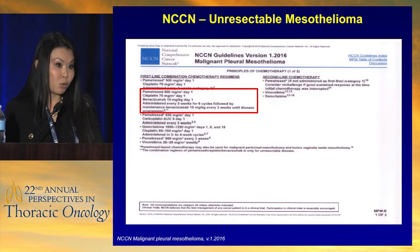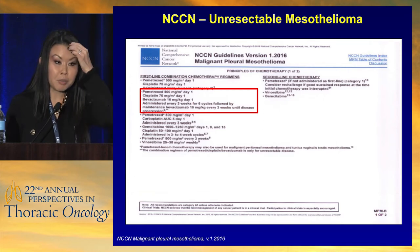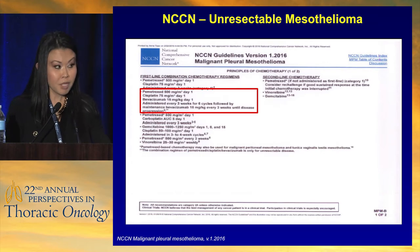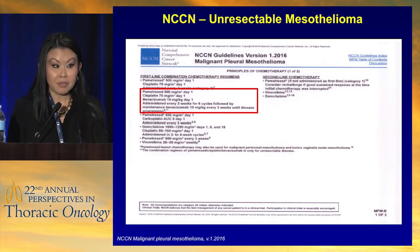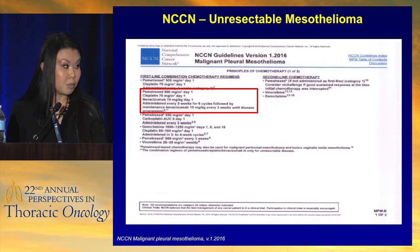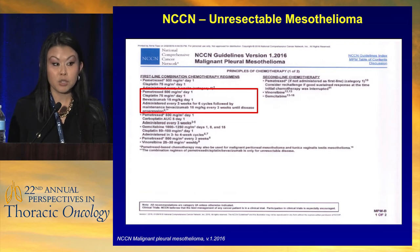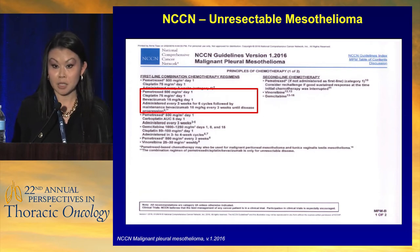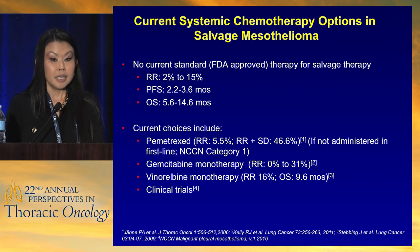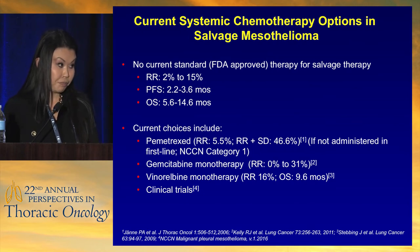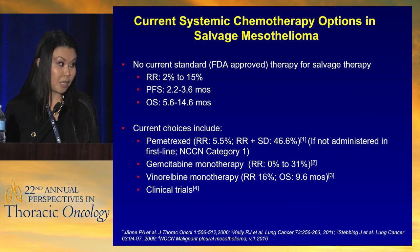Bevacizumab will not be getting formal regulatory approval — not because the results weren't accurate, but because the MAPS trial was not conducted as a registration trial and the company was unable to file with regulatory agencies. However, it can still be covered for patients. Standard bevacizumab restrictions apply: no recent CVA or MI in the last six months, no frank hemoptysis or bleeding diathesis. For patients with good ECOG PS 0-1 needing bulk reduction, the triplet regimen is covered via NCCN guidelines. In the salvage setting, pembrolizumab and ipilimumab-nivolumab have just recently been added to the NCCN guidelines as salvage therapies.